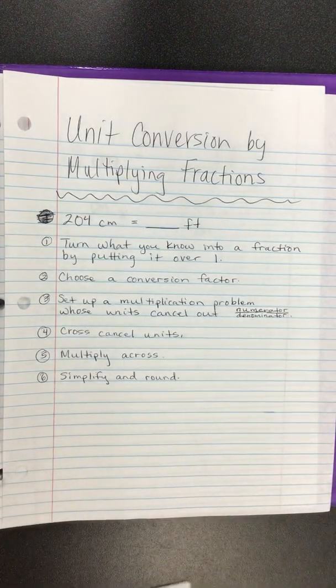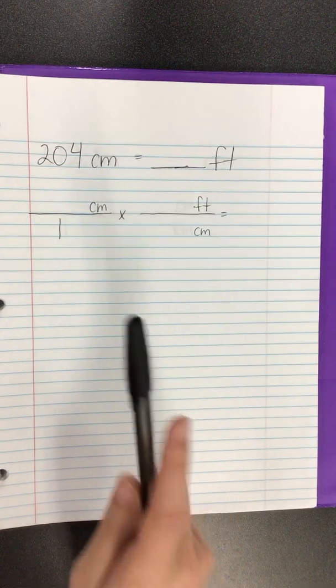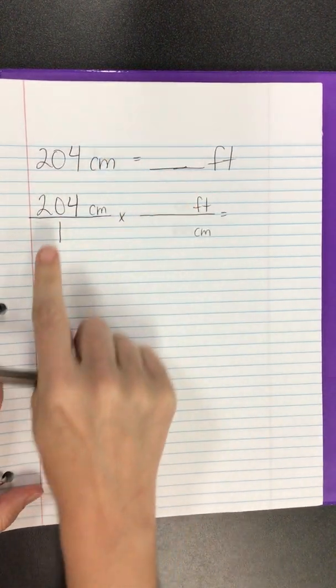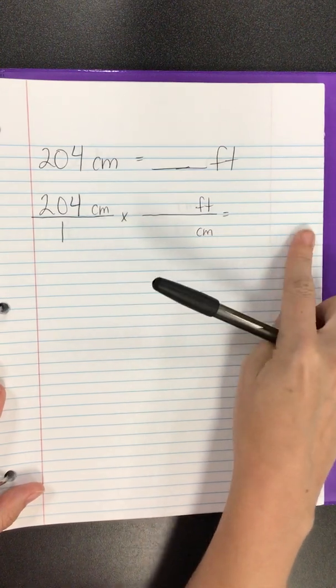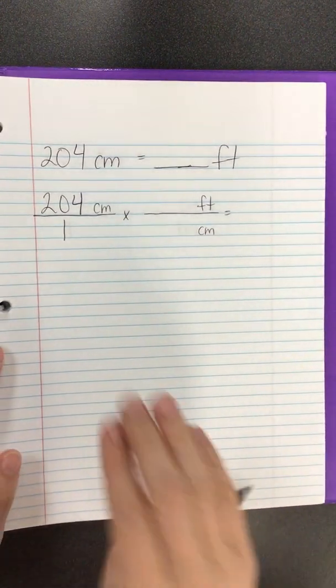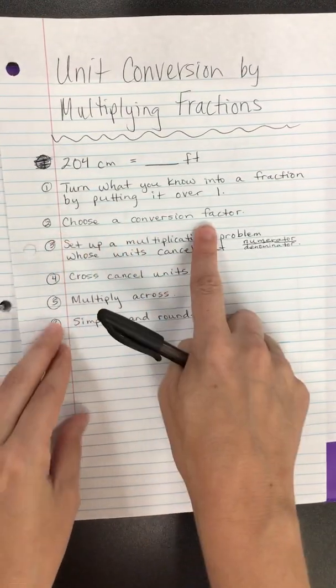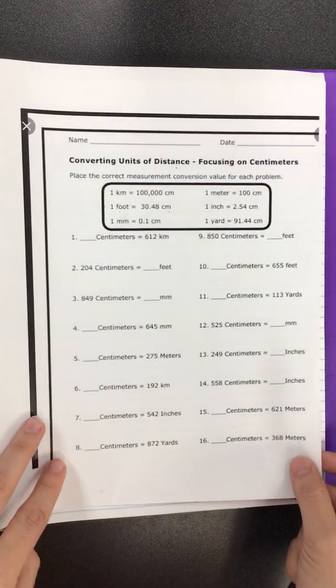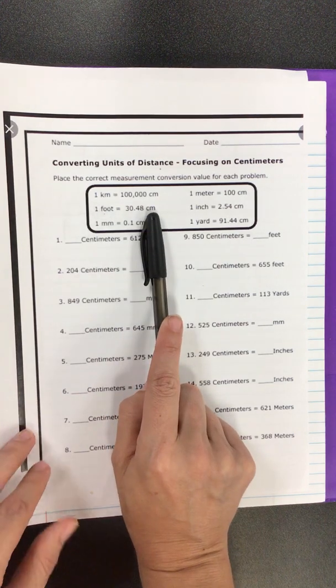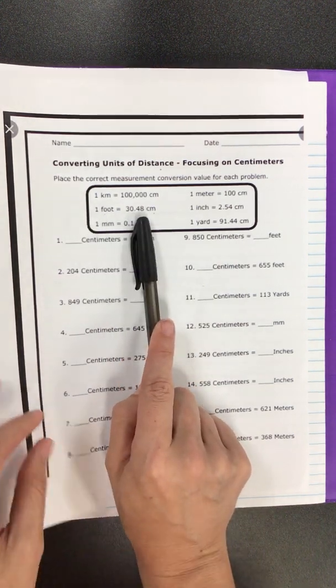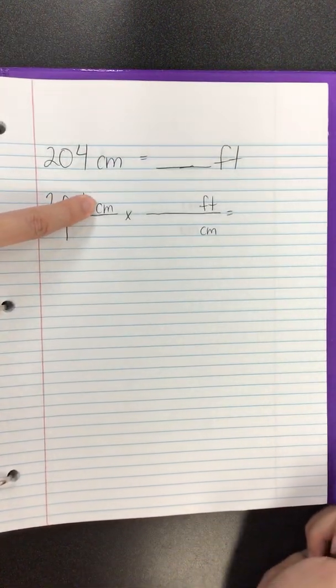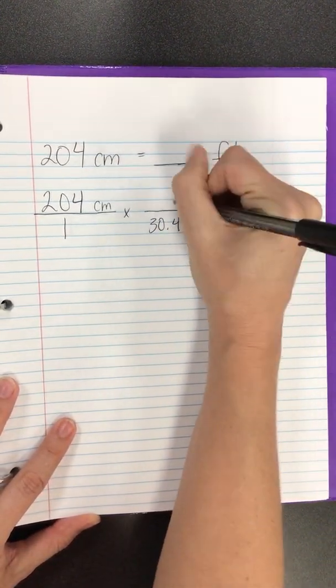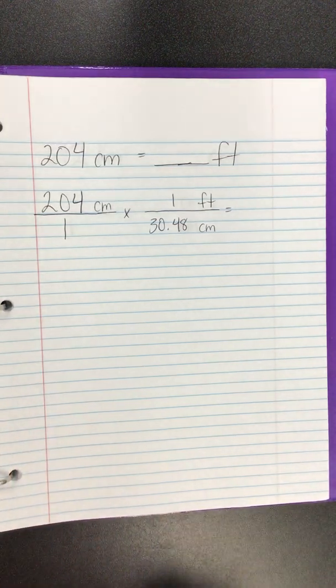So let's just work a practice problem and see how it goes. First, we take what we know, 204 centimeters, and turn it into a fraction by putting it over one. You got to have units at every step in the whole process and in your answer. We're going to choose a conversion factor and turn that conversion factor into a fraction. In this case, one foot equals 30.48 centimeters. So I'm going to turn that into a fraction where if I have centimeters in the numerator here, I want centimeters in the denominator over here. So 30.48 centimeters over one foot.